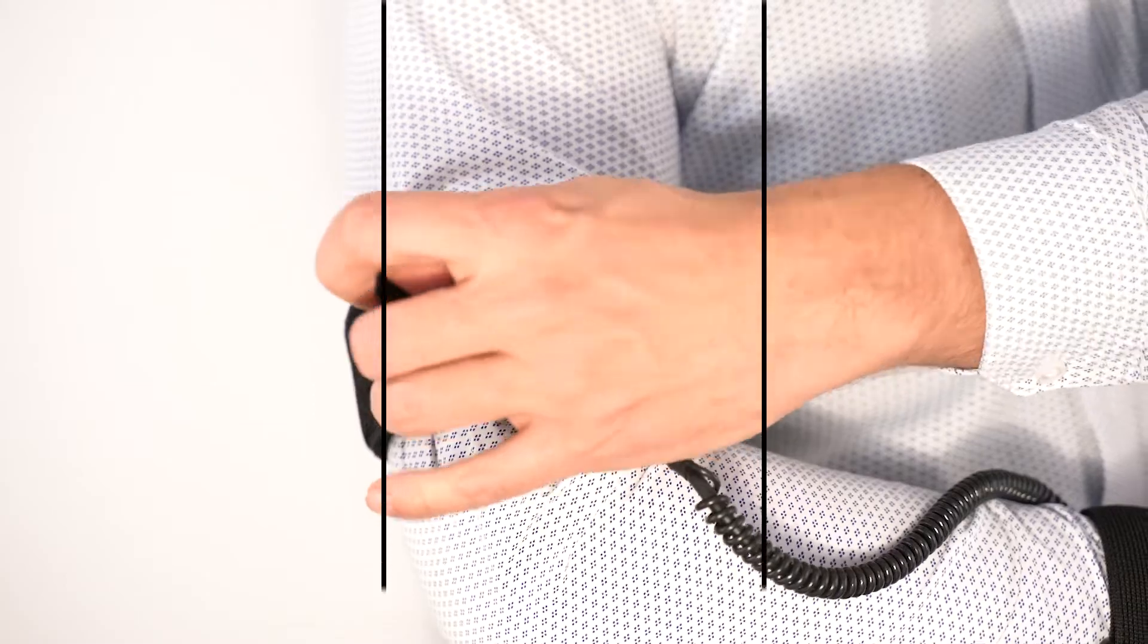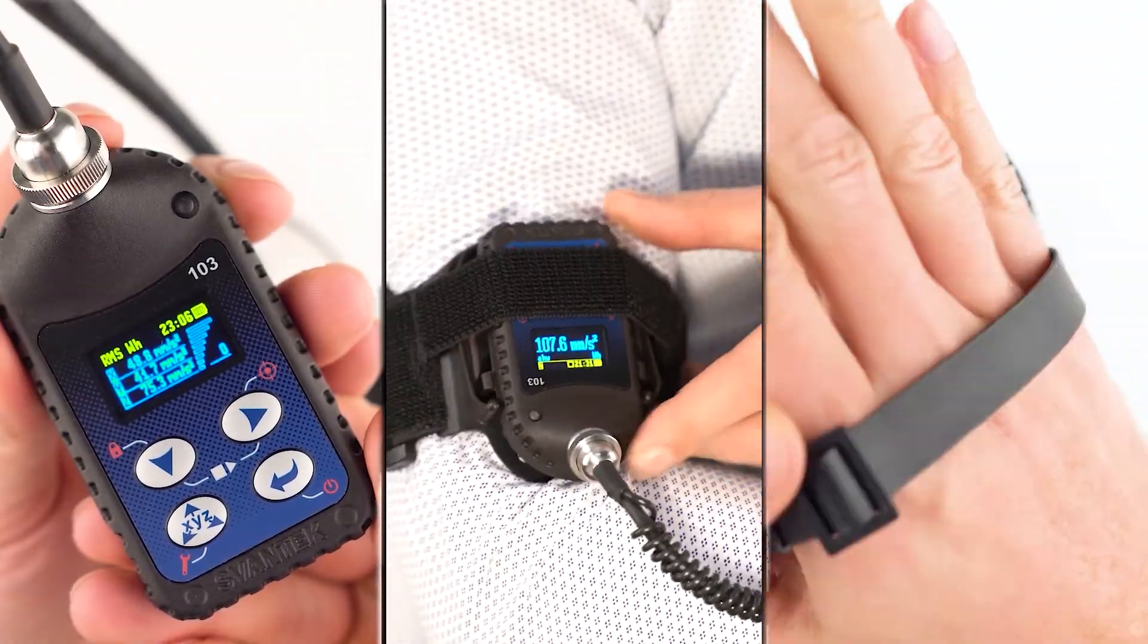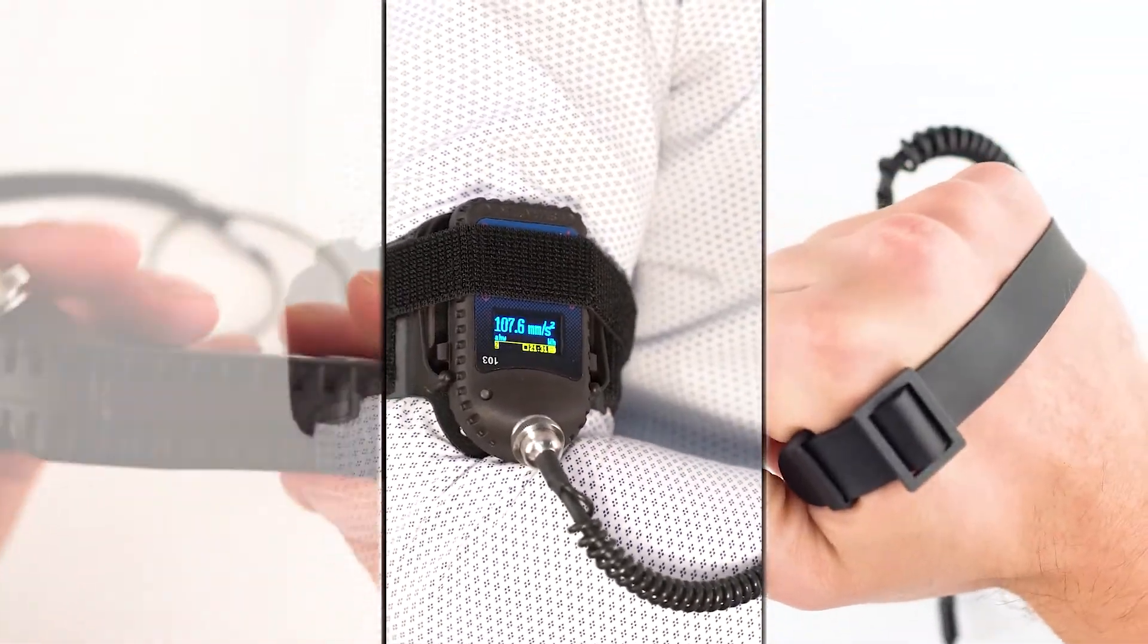5. Displacement, velocity, and acceleration are key descriptors, with their measurement units and conversion methods discussed in relation to ISO standards.